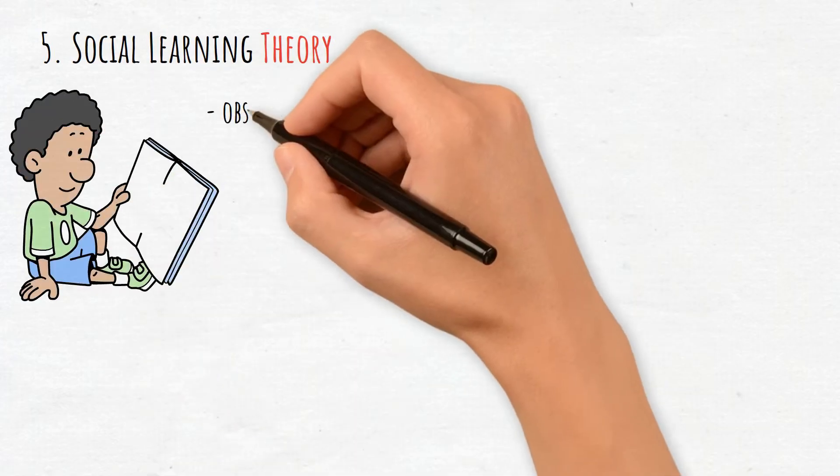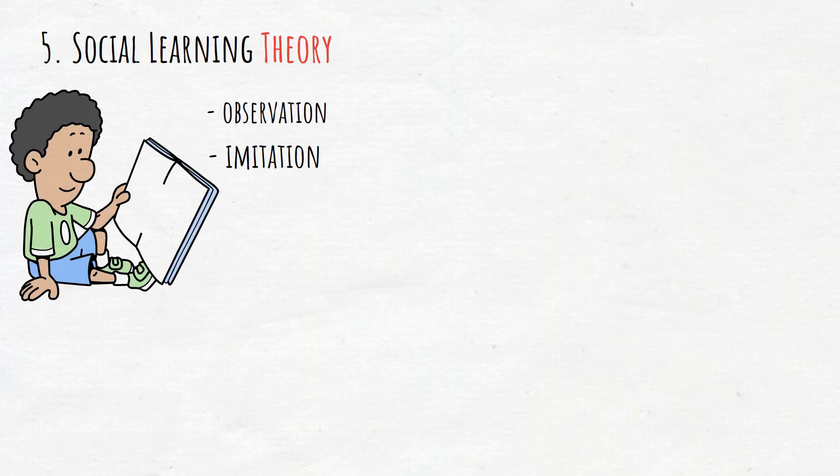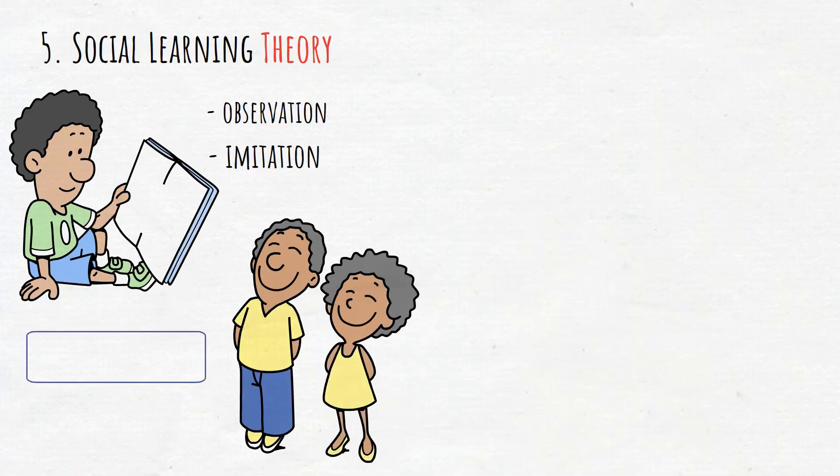5. Social Learning Theory. This theory emphasizes learning through observation and imitation. Children acquire behaviors by watching others, especially through processes like modeling and reinforcement.